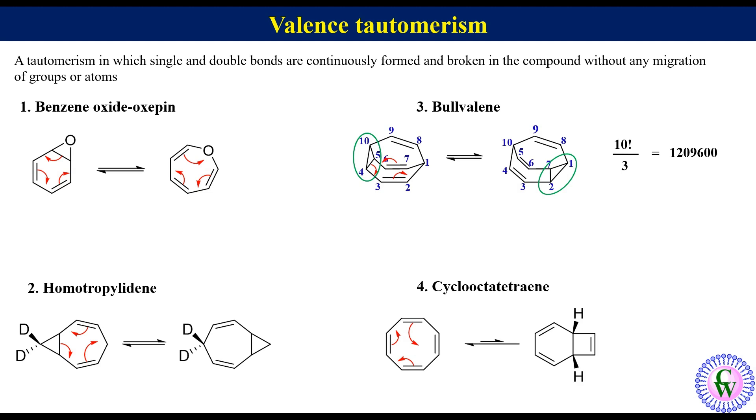These two compounds are interconvertible, and in this pair, cyclooctatetraene is more stable than the bicyclic structure. Thus these two pairs also represent valence tautomerism.